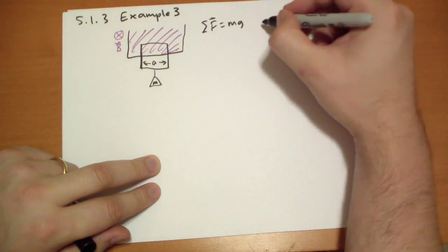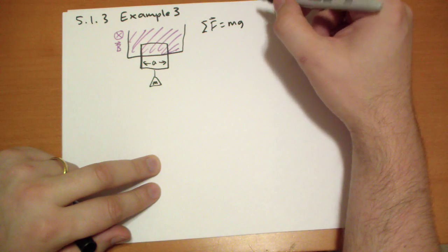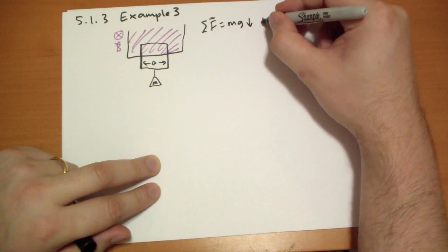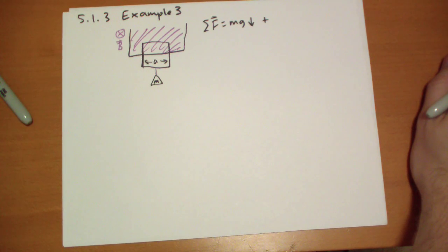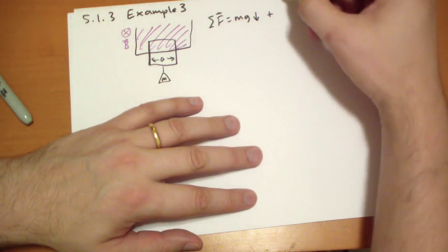Mg pointed in the downward direction, that's down. Plus, let's take the length of that wire there. It's a straight path, so doing that integral.